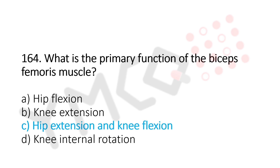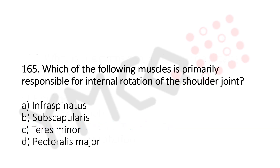Now, let's move to question number 165. Which of the following muscles is primarily responsible for internal rotation of the shoulder joint? Option A, infraspinatus. Option B, subscapularis. Option C, teres minor. Option D, pectoralis major. And the answer is Option B, subscapularis.